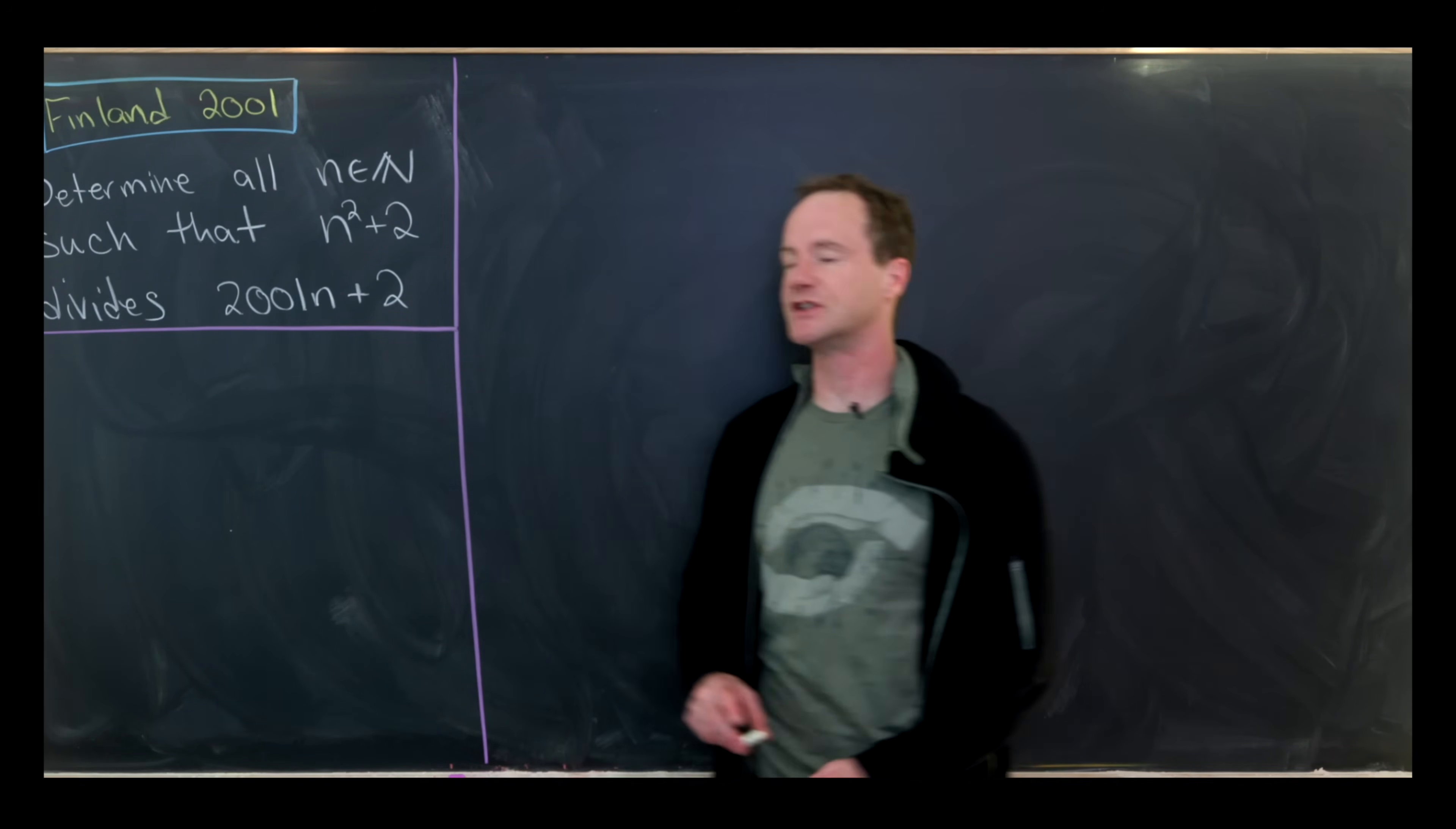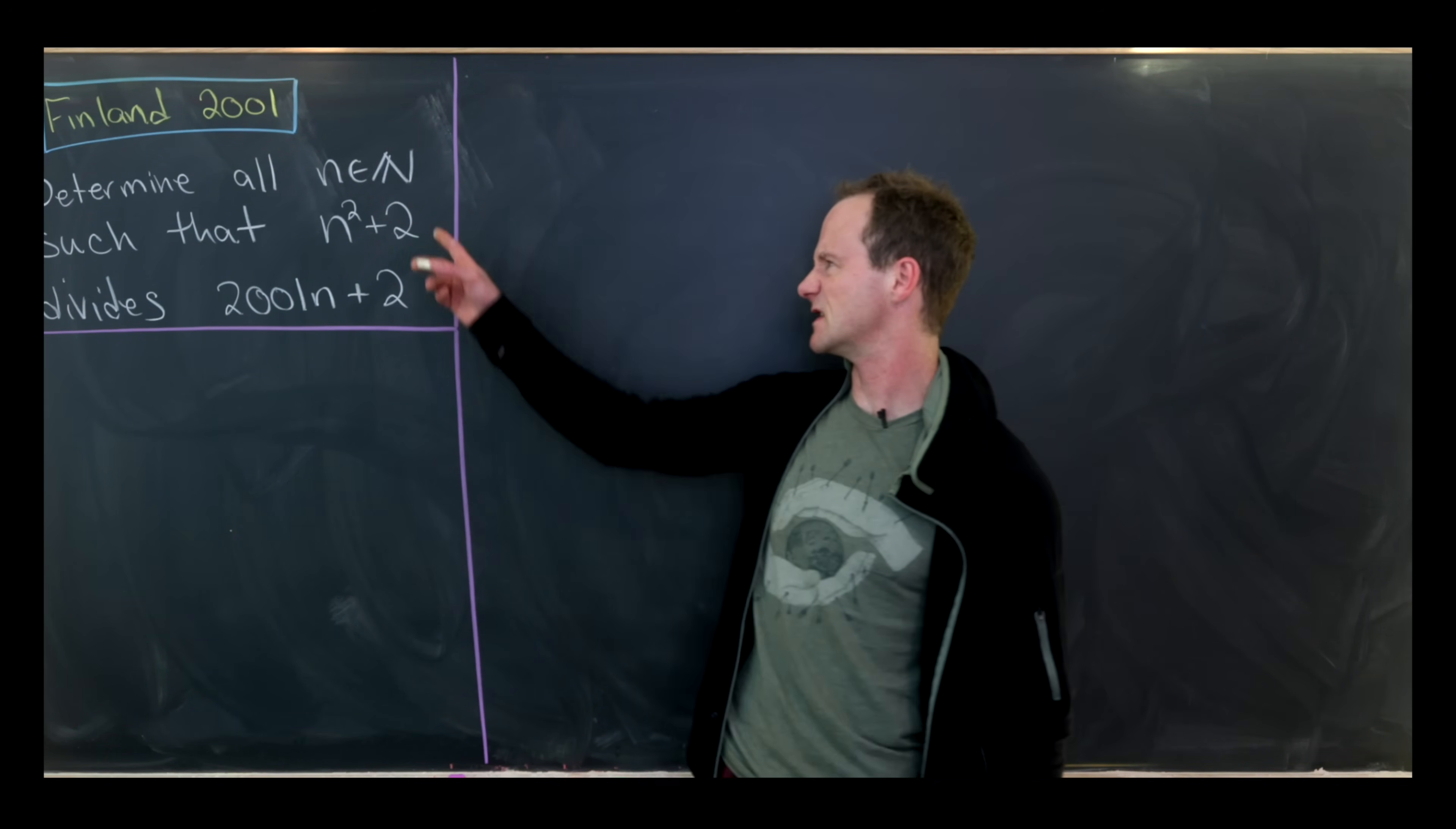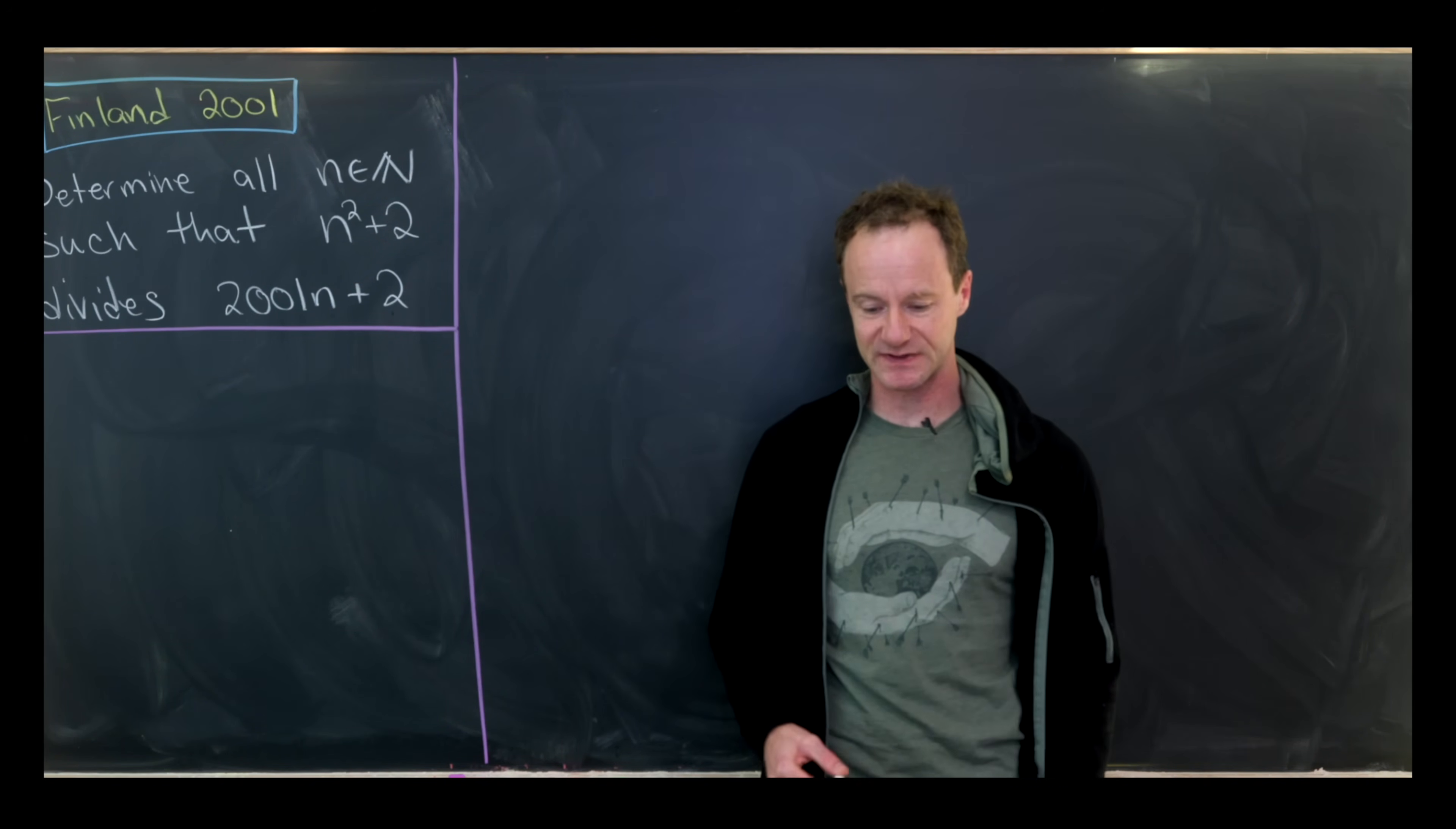Our goal is to determine all natural numbers n such that n² + 2 divides 2001n + 2. When I say that one number divides the other, it means that this number is a factor of this number. Or as we will see, it means that 2001n + 2 can be written as n² + 2 times something else.